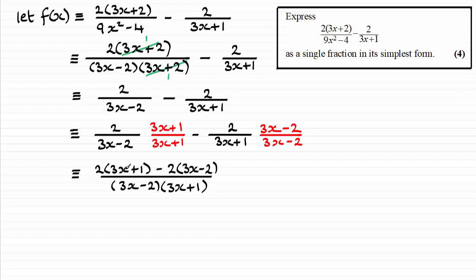So next we would expand the top line, the numerator. And if you do that, you'll get 6x plus 2 minus 6x plus 4.